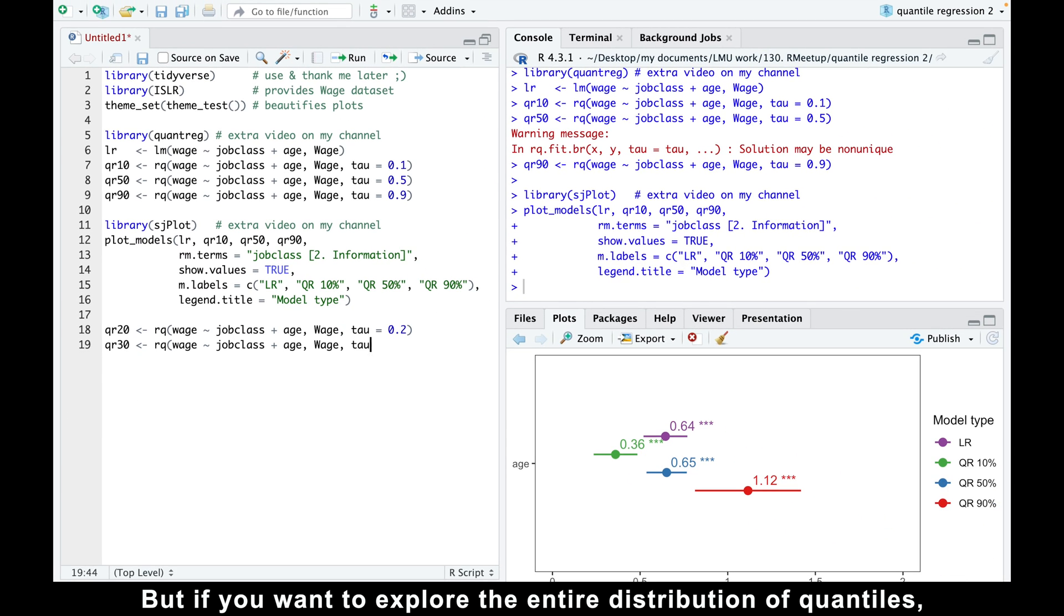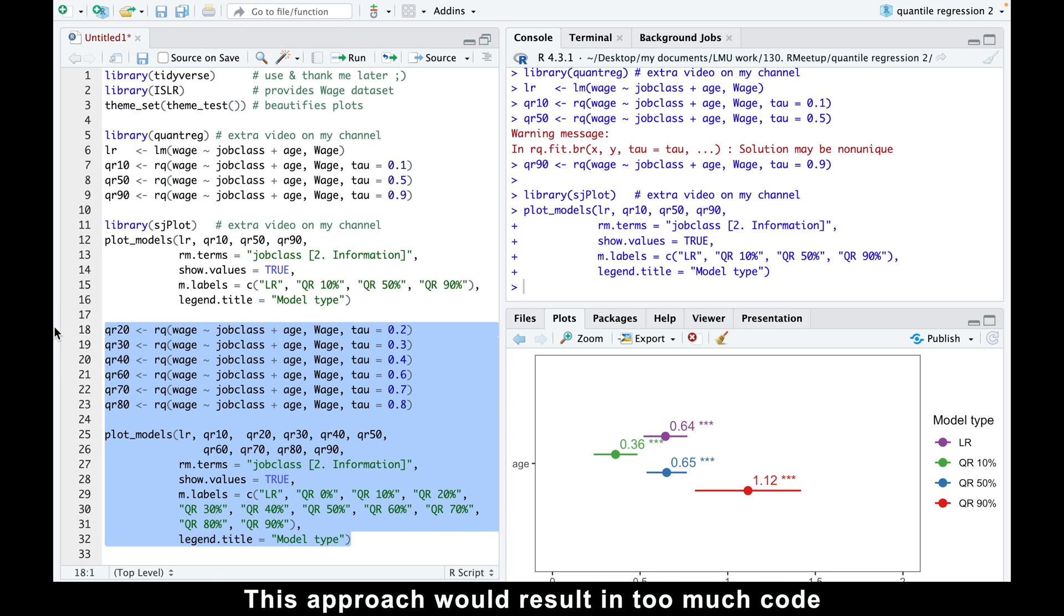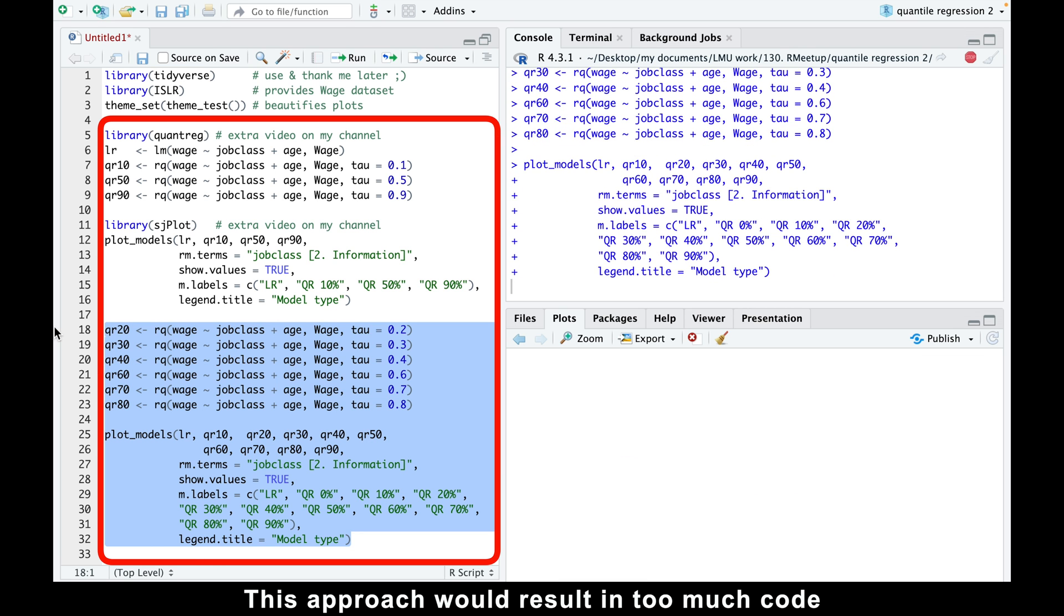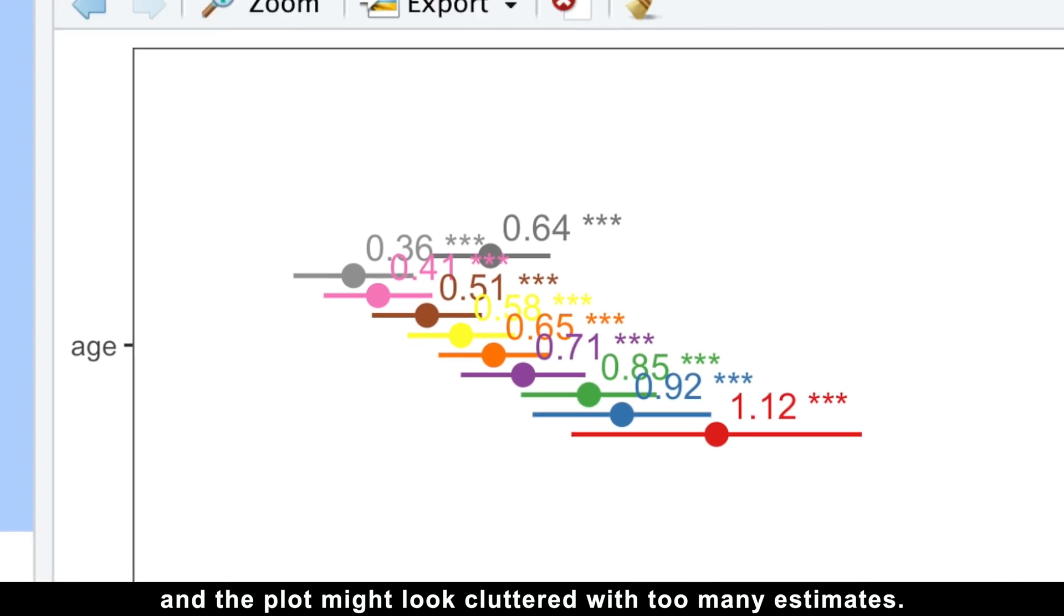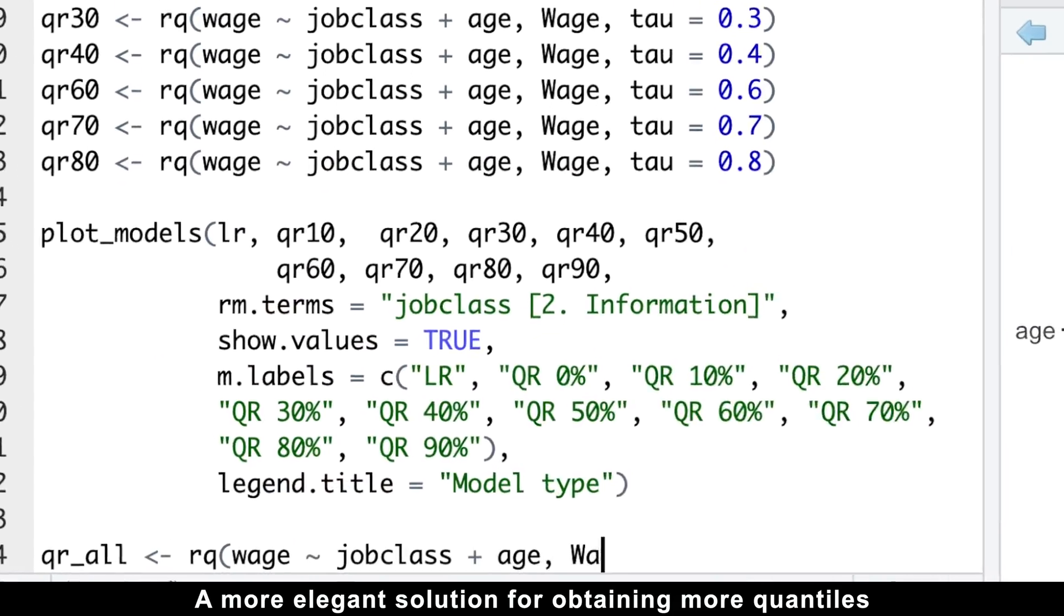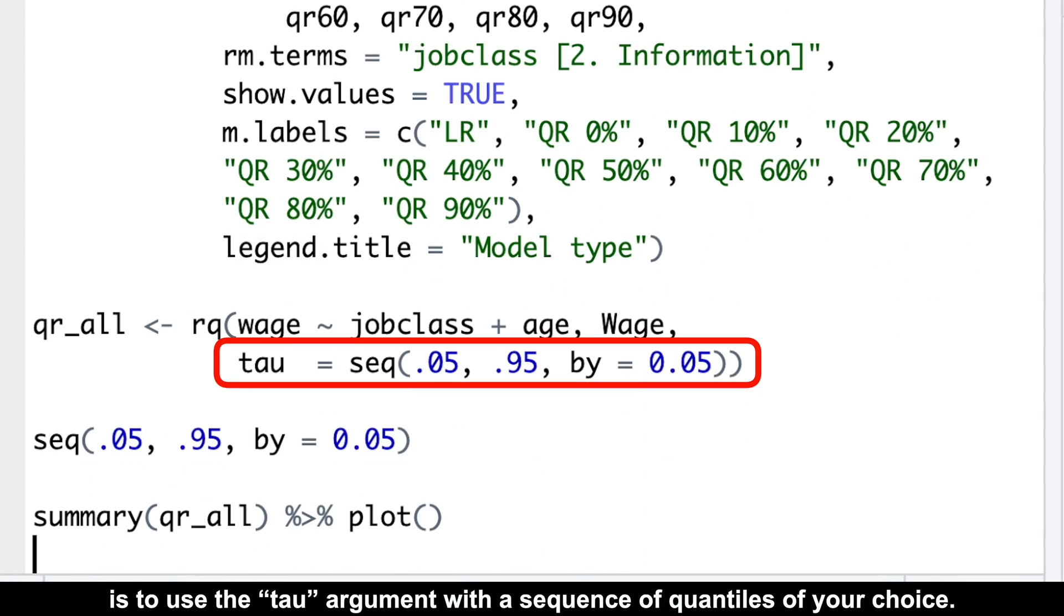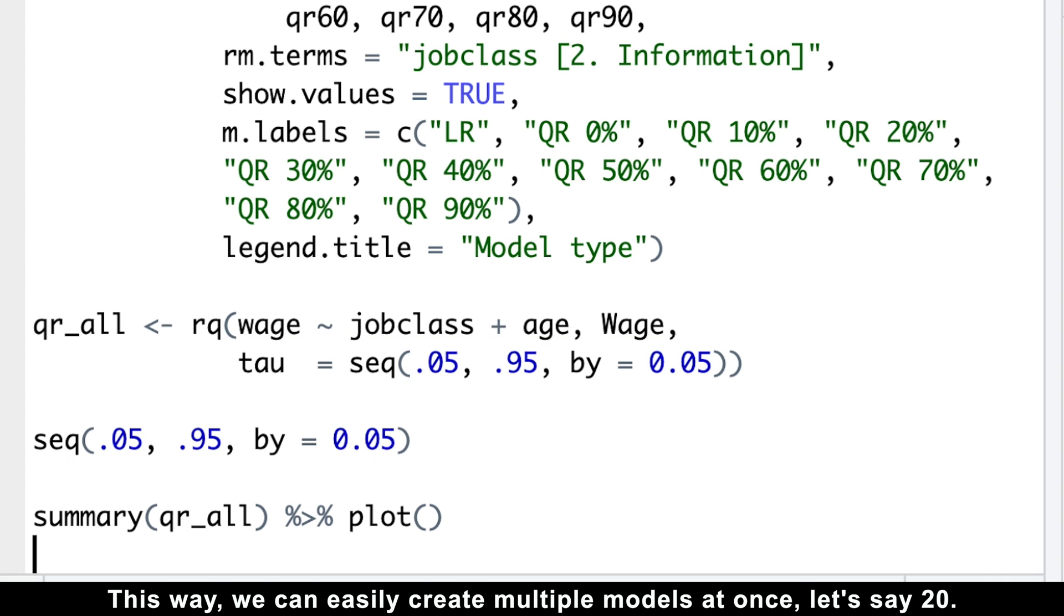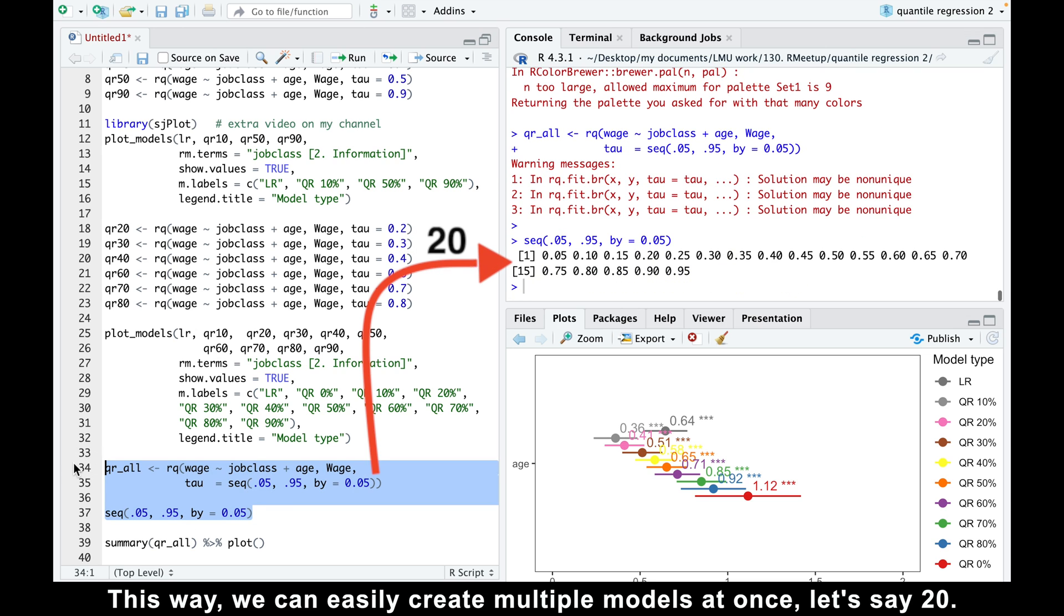But if you want to explore the entire distribution of quantiles, creating a new model for each quantile would be necessary. This approach would result in too much code and the plot might look cluttered with too many estimates. A more elegant solution for obtaining more quantiles is to use the tau argument with the sequence of quantiles of your choice. This way, we can easily create multiple models at once, let's say 20.